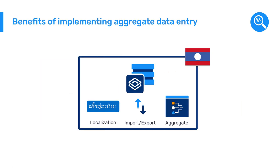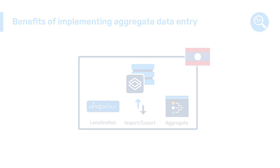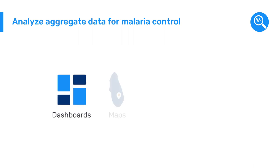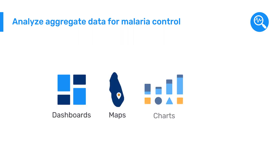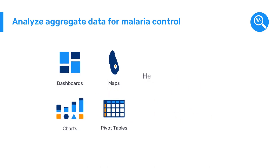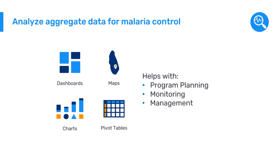What was the benefit of this implementation for them? Using DHIS-2, health authorities in Laos were able to analyze the data using dashboards, maps, charts, and other visualizations much more quickly and with fewer errors, which helped with program planning, monitoring, and management for malaria control.